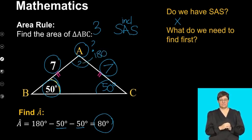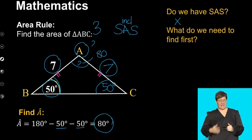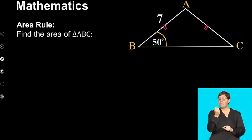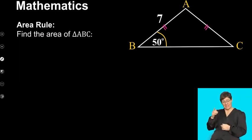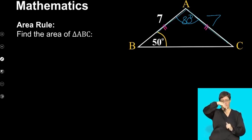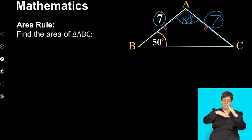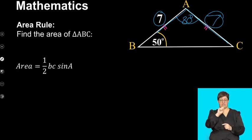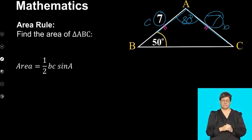Now that we have our side, angle, side, we can go in and apply the area rule. We said this side has a length of seven, and we calculated angle A to be 80 degrees. So we're going to be using this V pattern here — side, angle, side. The version of the area rule we're going to be using is half B, C, sine of A.